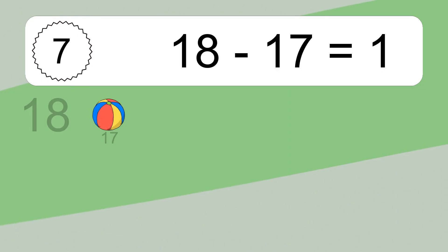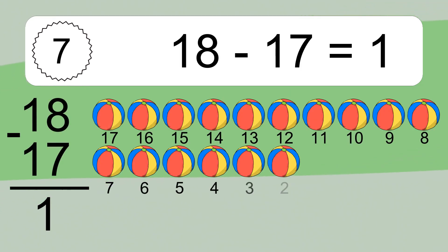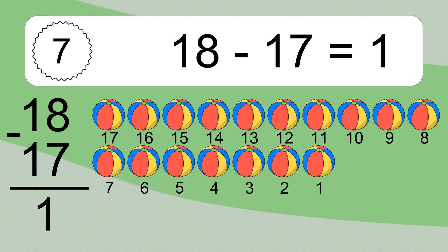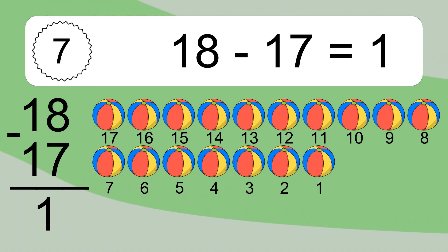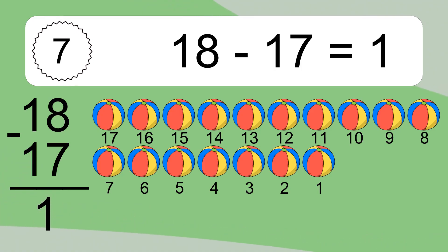18 minus 17 equals what? 18 minus 17 equals 1. Let's count it: 17, 16, 15, 14, 13, 12, 11, 10, 9, 8, 7, 6, 5, 4, 3, 2, 1.